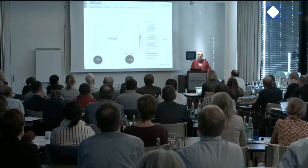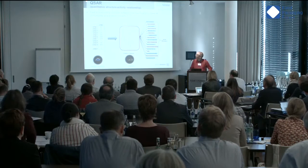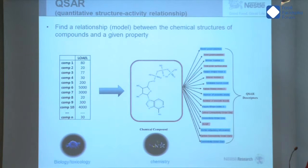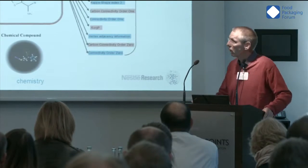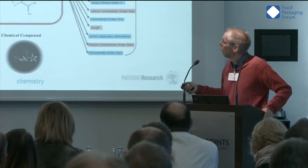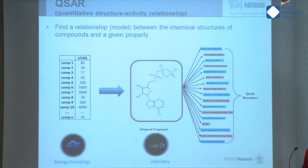The first approach I would like to present is the QSAR — the quantitative structure-activity relationship. The principle is to find the relationship between the chemical structure of compounds and given properties. For instance, you have here lowest observed adverse effect levels — a toxicological value — in that case in the rat for chronic toxicity, for different compounds.